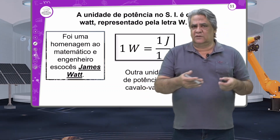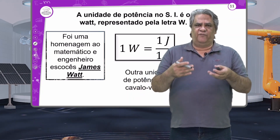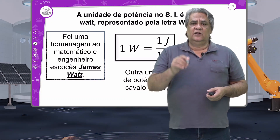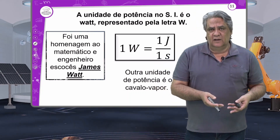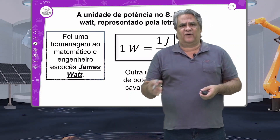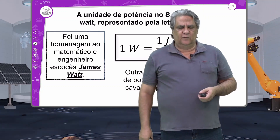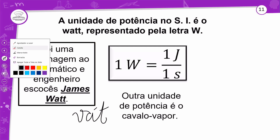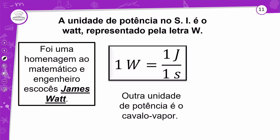James Watt foi o grande inventor do motor a vapor, de onde vem a Revolução Industrial. Em homenagem a ele, deu-se o nome de watt para a unidade de potência. No Brasil fala-se 'watts'. Pode utilizar a palavra watts — é a maneira de pronunciar; ao escrever, usa-se a grafia correta com um T. Outra unidade de potência é o cavalo-vapor. Em relação às máquinas, às vezes se fala que um carro tem tantos cavalos.